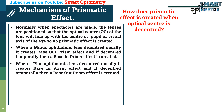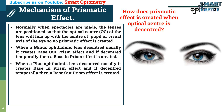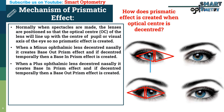When a plus ophthalmic lens is decentered nasally, it creates a base in prism effect. And if decentered temporally, a base out prism effect is created. In the figure, you can see that when a plus ophthalmic lens is decentered nasally, the central rays are passing through a prism that is base in. And when a plus ophthalmic lens is decentered temporally, the central rays are passing through a prism that is base out.